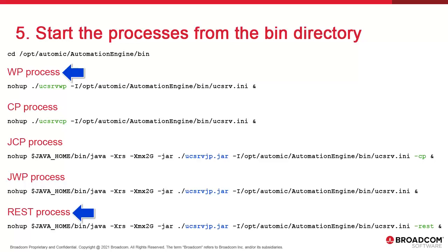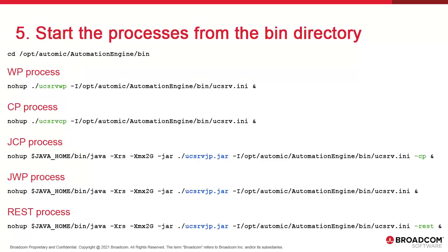REST can start at the end. It's best to start JWP after the CPs and JCPs, but before REST. The order between CPs and JCPs isn't important unless agent reconnection times are a factor. TLS agents connect over JCP, while non-TLS agents use CPs. Depending on the proportion of each, you may want to prioritize one over the other. To start processes, we execute from the executable's location. For all processes, we use the –i option to specify the ucsrv.ini file, unless the executable and the ini are in the same location, which is generally the case — they're both in the bin directory. Using –i is still good practice.